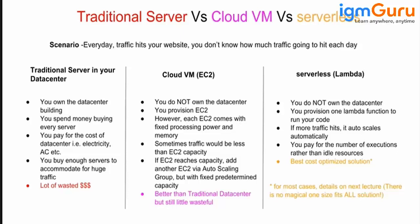Then you go to EC2 instances, which are better than your traditional servers. You don't have to buy the servers but you have to provision them. The problem is that these servers come in a fixed number — if you go for t2 micro you will have to go for 1 GB RAM, or if you go for a bigger instance, you go for 4 GB or 8 GB RAM. But there are chances that you don't use that much.